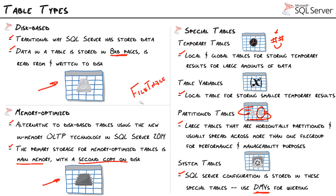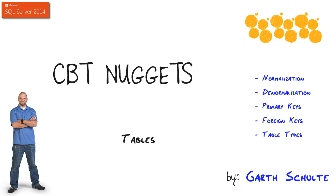File table is a special table for managing blob data — unstructured data like images and videos. It's built on top of FileStream, which enables us to store blob data in SQL Server or in the file system with a reference in SQL Server, giving us transactional consistency. We can store blob data outside of SQL Server but SQL Server remains aware of it, and users can access it through SQL Server or through a Windows file share. It's a great feature for designing blob storage.